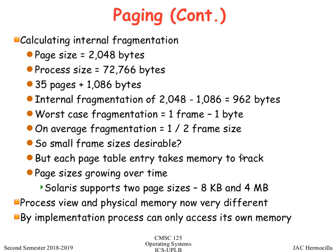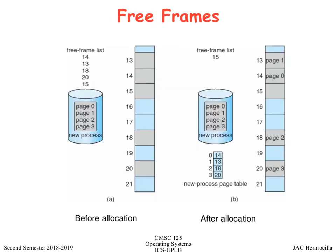We need to have a list of free frames wherein we're going to map the page number to a particular frame number. You have the free frame list, and these are the pages. Initially empty — you run a new process that has declared it needs four pages, and the operating system maintains a free frame list. When this process is loaded, the page table is created and the mapping is made. The free frame list was reduced in size, and you have only one remaining free frame.